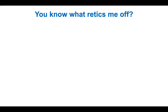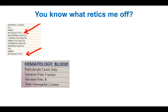What really bothers me about all of this is that it's really hard to figure out where to look and what to make of all these terms. The first screenshot is CPRS and you have a reticulocyte percentage and a reticulocyte number. The bottom image is from EPIC. You really have to think about what to look at here.